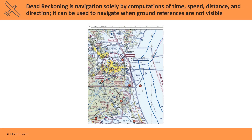Dead Reckoning is navigated solely by computations of time, speed, distance, and direction. It can be used to navigate when ground references aren't visible. The test will provide you a chart and ask you to make computations for heading, speeds, and time en route from one point to another.